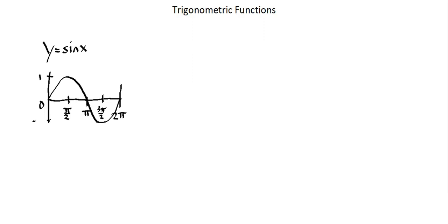So our range on the y-axis is from negative 1 to positive 1, and this is one cycle, or one period, on the x-axis from 0 to 2π for the function y equals sine x. I can use my function — either the algebra or the graph — to identify my outputs for various inputs.